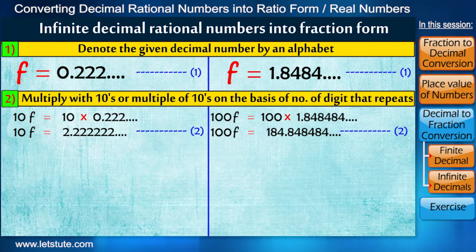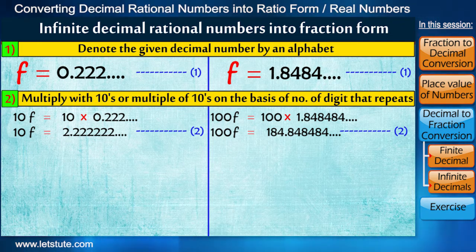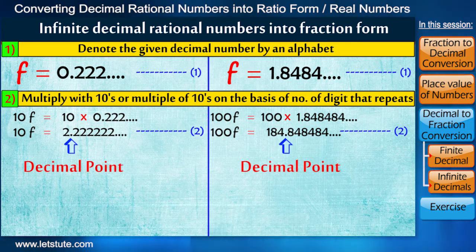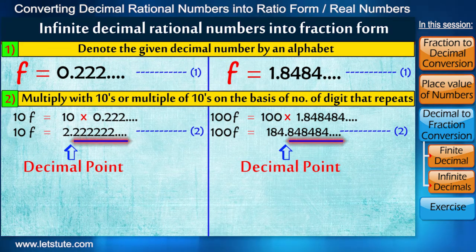Now as we did in the case of finite decimals, here too we have to get rid of this decimal point. And that can be done only when all the digits after decimal are zero, right?